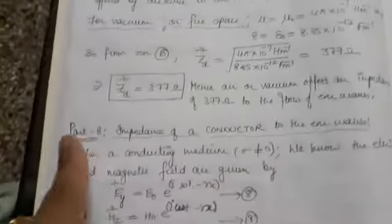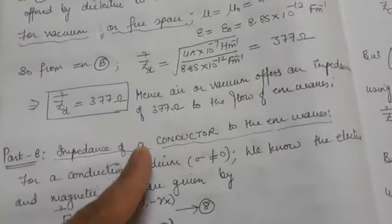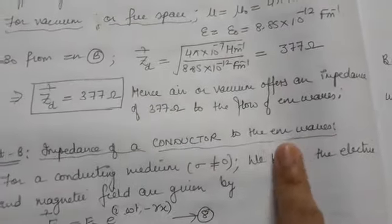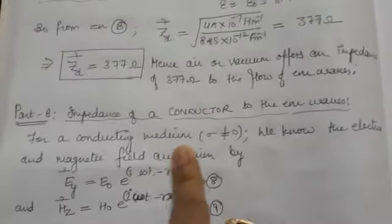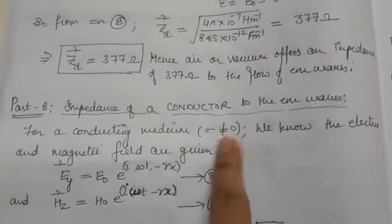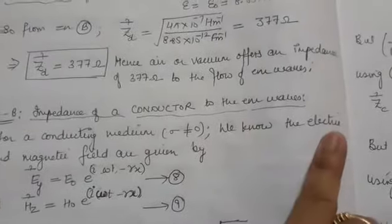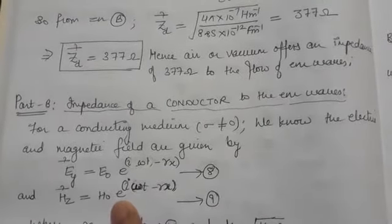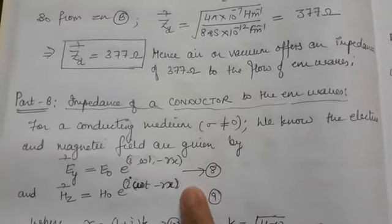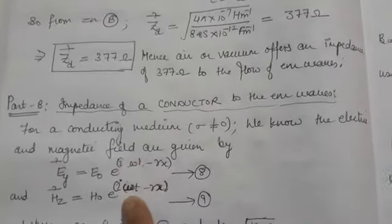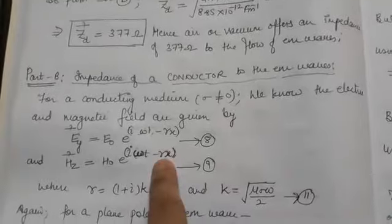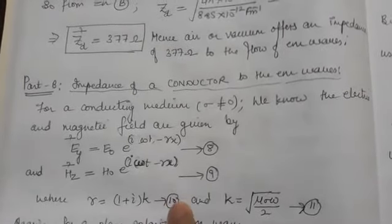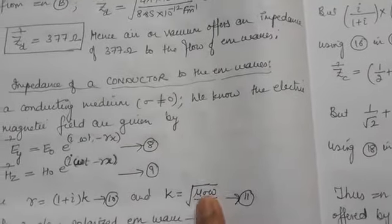Now let us move to Part B — the impedance of a conductor to the electromagnetic wave, meaning how much impedance a conductor offers when electromagnetic waves pass through it. For a conducting medium, sigma is non-zero. The electric and magnetic field vectors are given by equations 8 and 9 — EY and HZ — which are the solutions for electromagnetic waves in conductors. Here gamma = (1 + i)k for a wave traveling along the positive x-axis, and k = √(μσω / 2), given by equations 10 and 11.